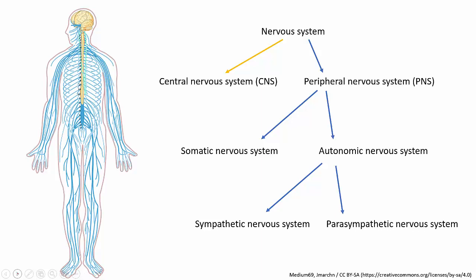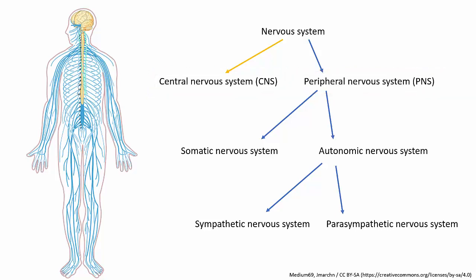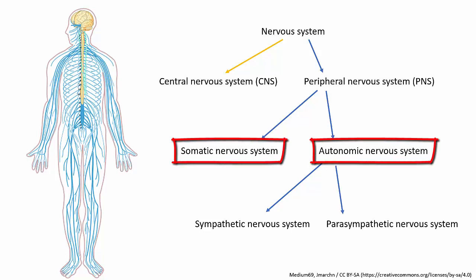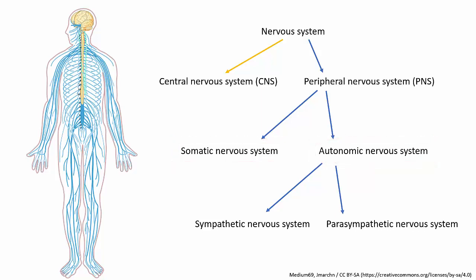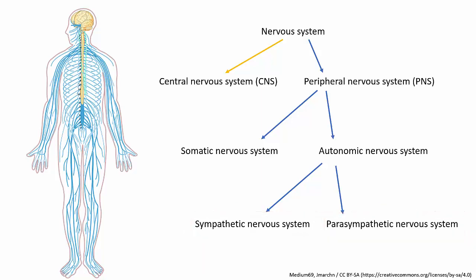So this gives us all the major parts of the nervous system. The nervous system is divided into the central and peripheral nervous systems. The peripheral nervous system is divided into the somatic and autonomic nervous systems — remember, somatic is the conscious part, autonomic is the unconscious part. And the autonomic nervous system is further divided into the sympathetic and parasympathetic nervous systems, which are for getting you geared up or calming you down. Together, all these parts sense your surroundings, process information, make decisions, and control the other organ systems, looking after both the conscious and unconscious functions of your body.